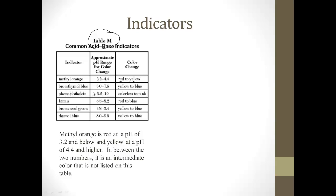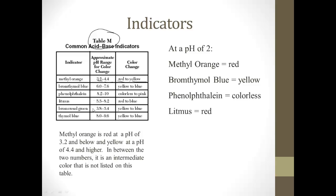So phenolphthalein, when the pH gets lower than 8.2, it's clear, colorless, greater, it's pink. So, at a pH of 2, methyl orange, what color is that going to be? It'll be red. At a pH of 2, bromothymol blue, what color will that be? That will be yellow. At a pH of 2, phenolphthalein will be colorless. At a pH of 2, litmus will be red. At a pH of 2, bromocresol green is going to be yellow. And at a pH of 2, thymol blue will also be yellow. So, with the indicators, we don't have to memorize any of them. They're right on the reference table.